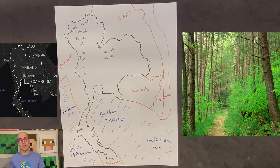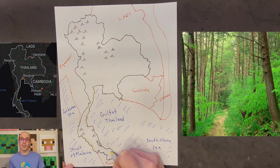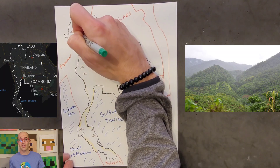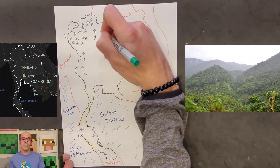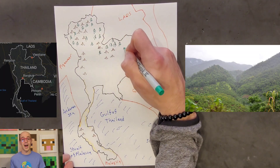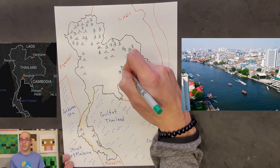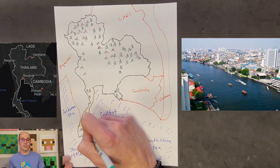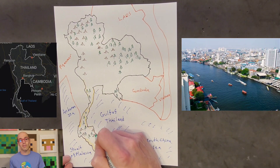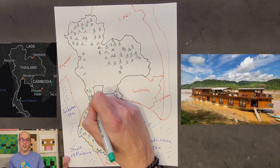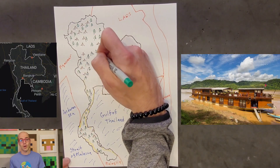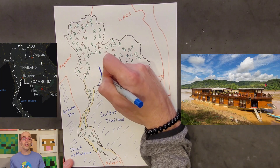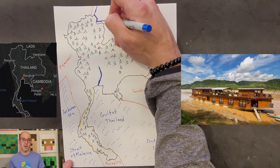Thailand is home to deciduous forests in the north, evergreen forests in the western regions, coastal mangrove forests, and tropical rainforests in the southern peninsula. Each of these forests greatly contributes to the biodiversity of Thailand. The Chao Phraya River, known as the King of Rivers, flows through central Thailand, serving as a vital lifeline for agriculture and transportation. Meanwhile, the Mekong River forms a natural boundary between Thailand and Laos in the northeast, playing a crucial role in the livelihood of communities along its banks.